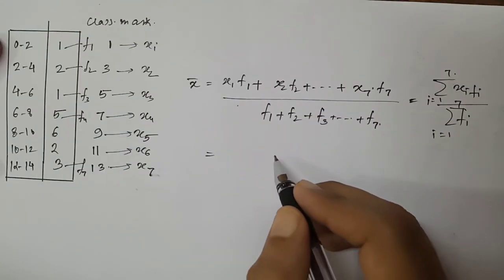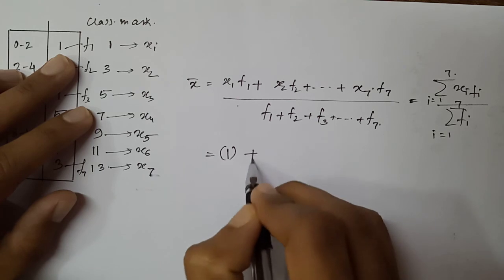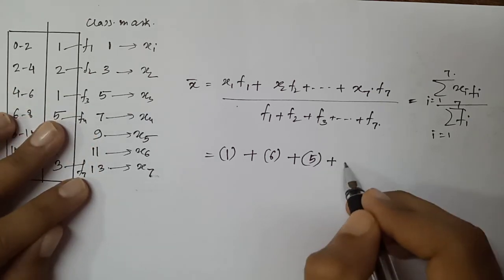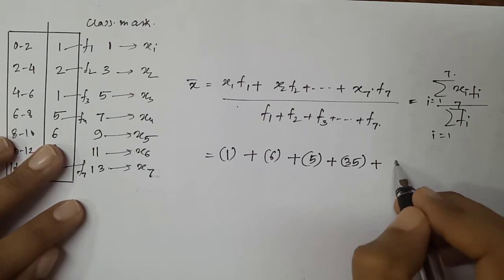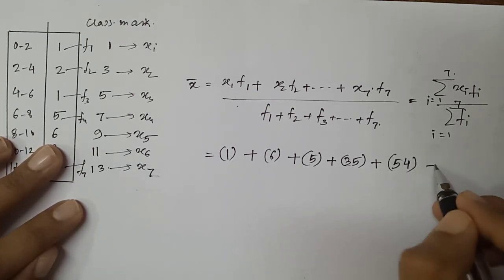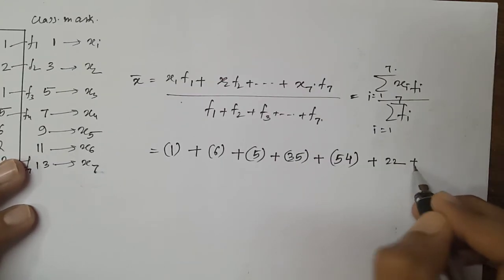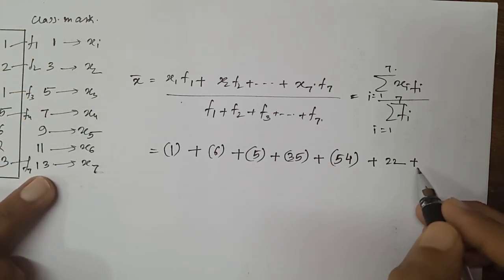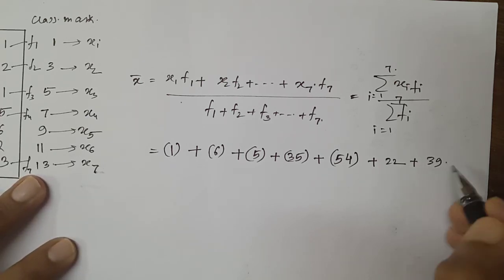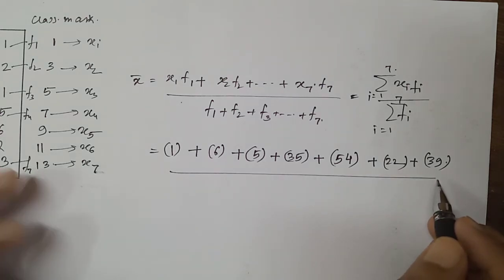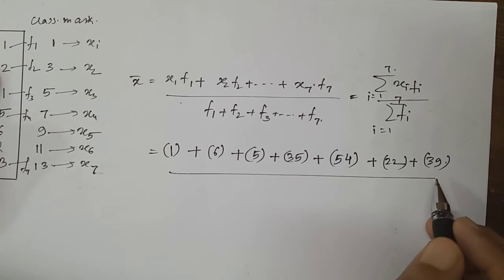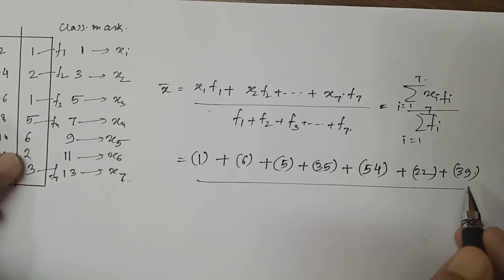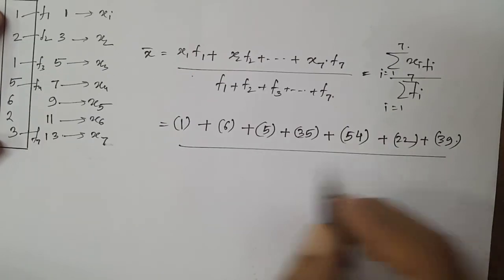Applying the formula: 1×1 = 1, plus 3×2 = 6, plus 5×1 = 5, plus 7×5 = 35, plus 9×6 = 54, plus 2×11 = 22, plus 3×13 = 39. Divided by the summation of frequencies: 1+2+1+5+6+2+3, which gives 20. So we divide by 20.